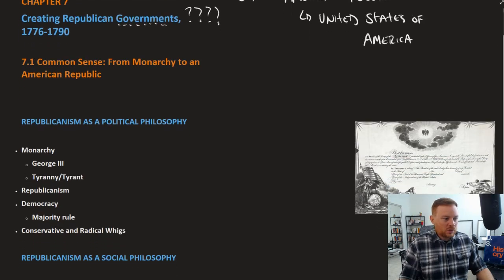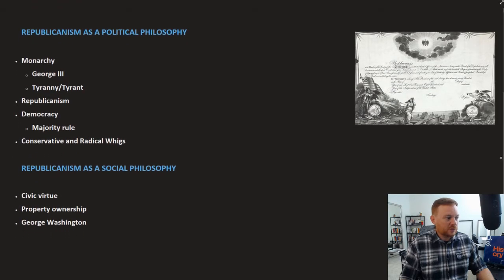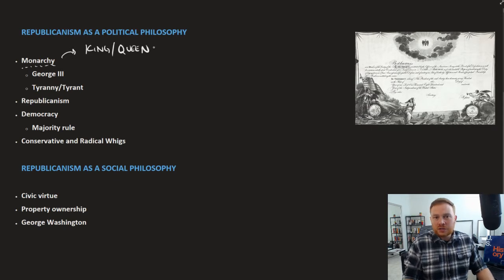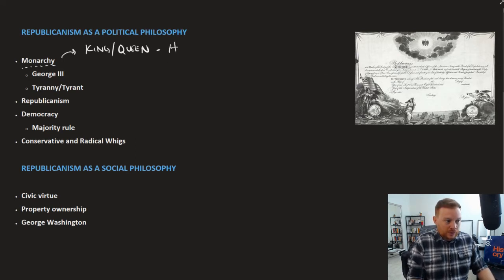At the time, the most common form of government was monarchy. A monarchy is a form of government in which one single king or queen essentially ruled the area — whatever country we're talking about. Those kings and queens are typically chosen by hereditary bloodlines.